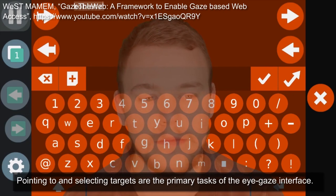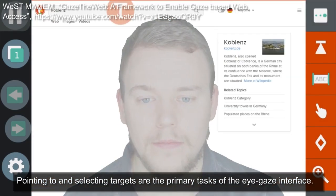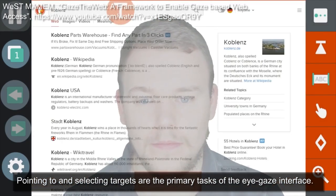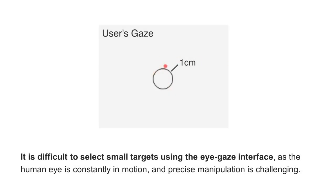Pointing to and selecting targets are the primary tasks of the eye gaze interface. However, it is difficult to select small targets using the eye gaze interface, as the human eye is constantly in motion and precise manipulation is challenging.